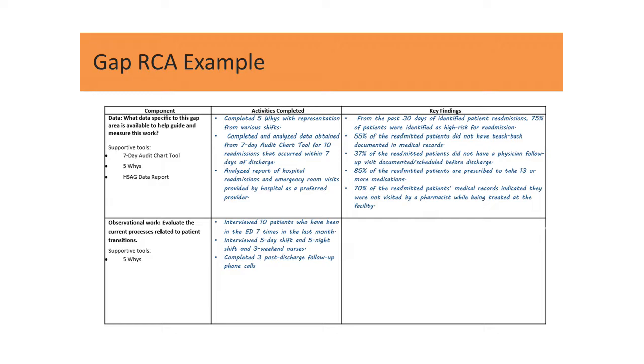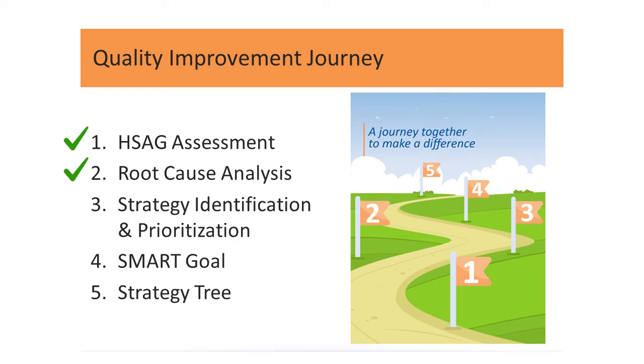Therefore, one major root cause to our issue is that leadership did not implement the staff validation process to ensure that teach back is proficiently being used at discharge. Now that we know what is causing our high readmissions, what do we do next? Especially as we're busy and short-staffed, how can we find the time to fix these problems? This is where mile marker three on our quality journey comes into play. In our next video, we will focus on how you can identify interventions to use these root causes and prioritize which ones to work on first.